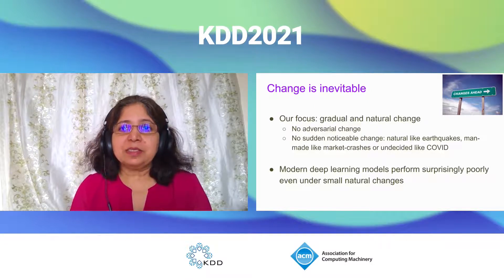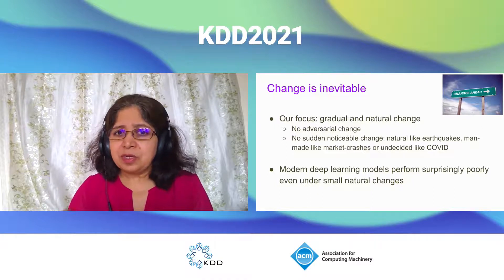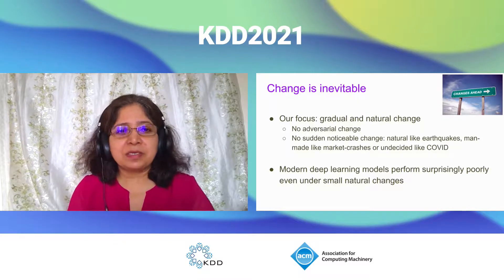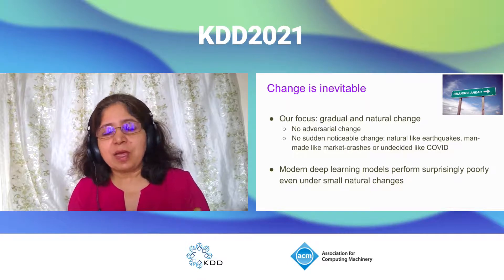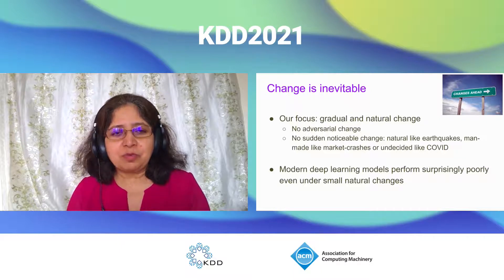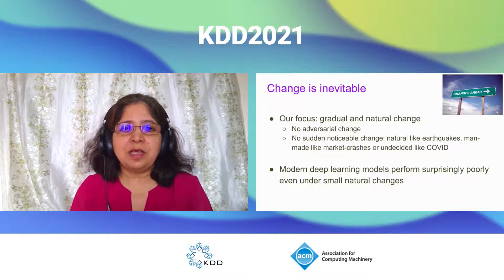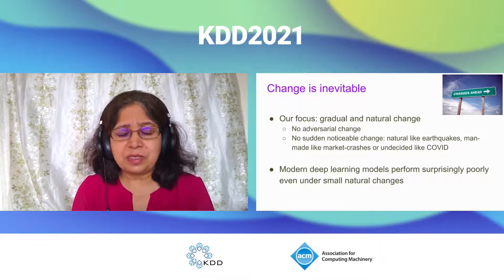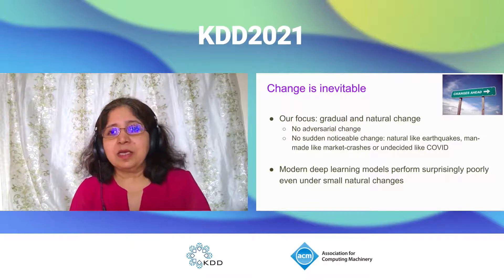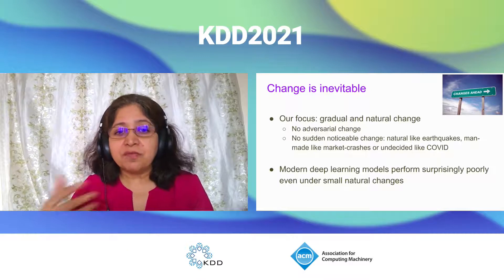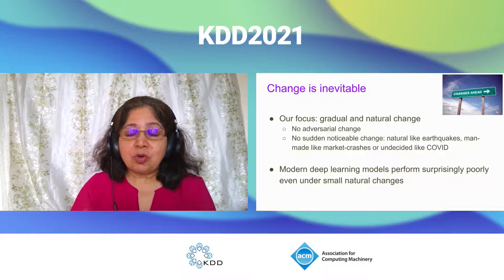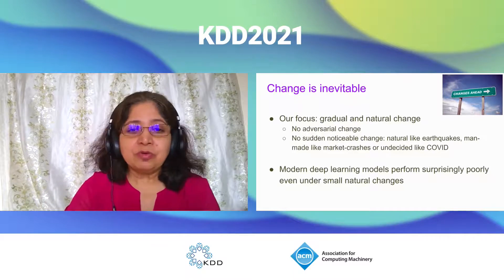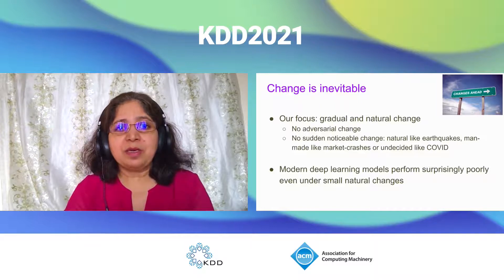Our focus is on changes which are natural and gradual — the kinds which human beings would not even notice. Change is fundamental to life, and we are not even talking about major changes like earthquakes, market crashes, or COVID. The alarming part is that, in spite of the huge success of deep learning models on data drawn from the same distribution, their robustness to change is not so great. I will demonstrate that with some experiences we had within my own research group.